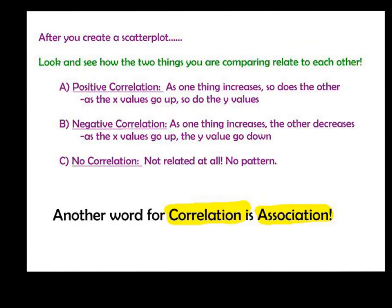After you make a scatter plot, one thing that you tend to need to do is look and see how the two things you are comparing relate to each other. So whatever you graph, you want to see what type of relationship or how those two things relate to each other. There are three types of relationships you might see in scatter plots, and you want to put these in your notes.